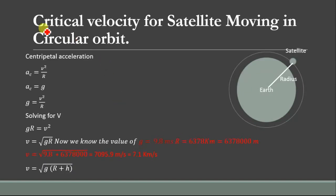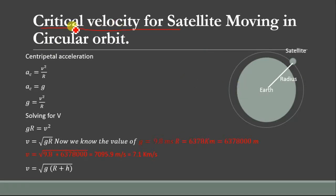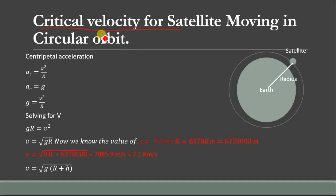So what is critical velocity? Critical velocity for a satellite is defined as the minimum velocity required for the satellite to stay in earth's orbit. If the velocity is decreased from this minimum value, then the satellite will certainly fall into the earth's surface. So for a satellite to stay in orbit, it must have a velocity greater than the critical velocity.